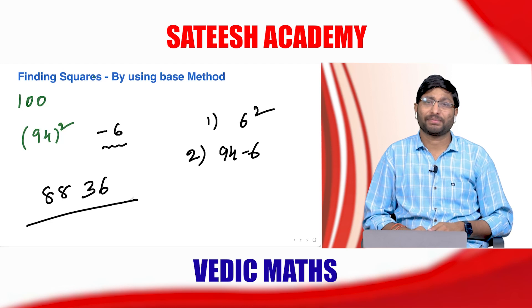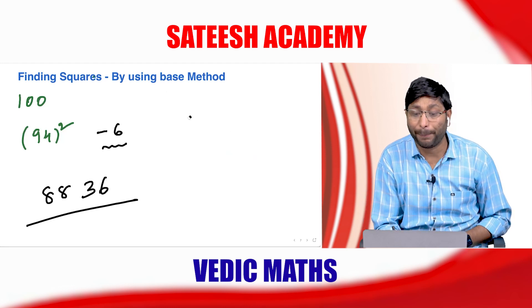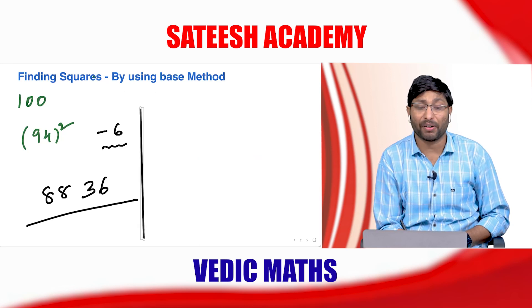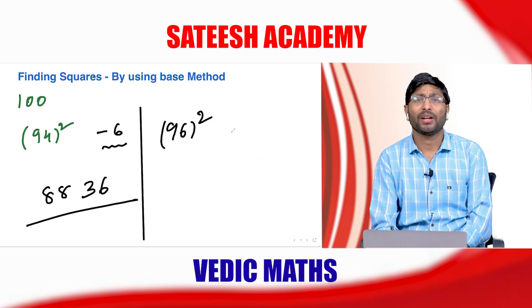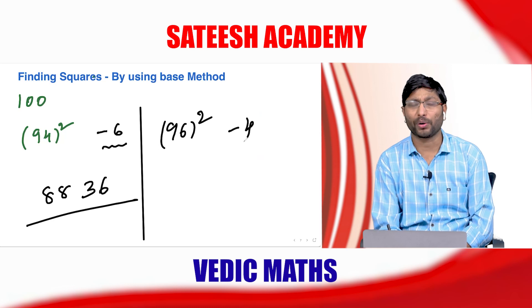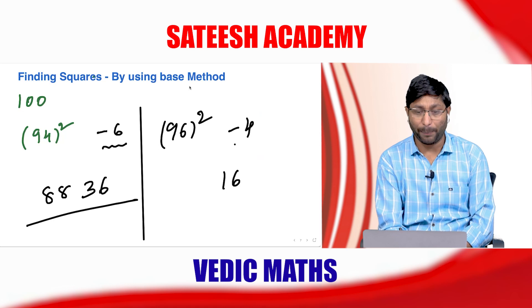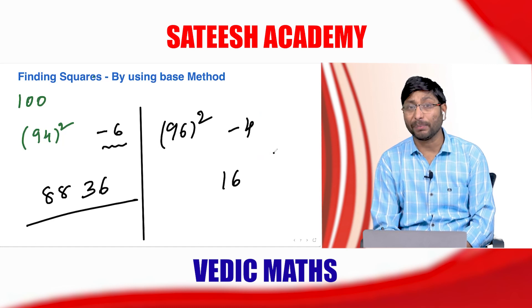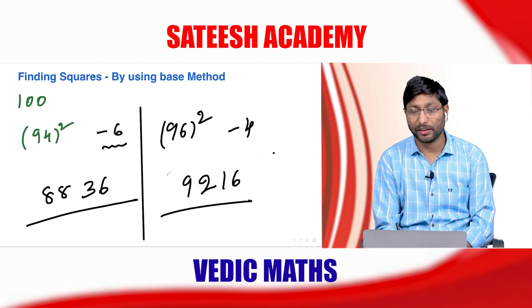By using the base number, I'm teaching you simple problems to show you the power of Vedic maths. Next: 96 squared. 100 minus 4, so the difference is minus 4. Step 1: minus 4 squared = 16. Step 2: 96 minus 4 = 92. The answer is 9216.